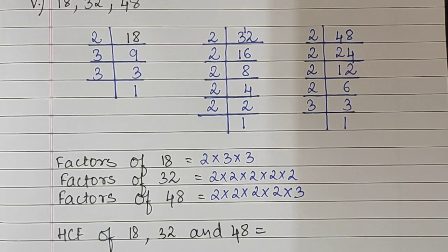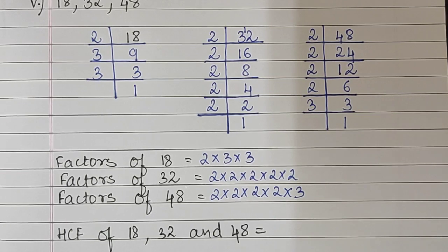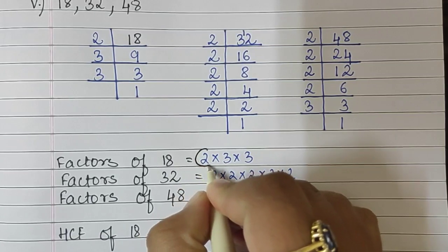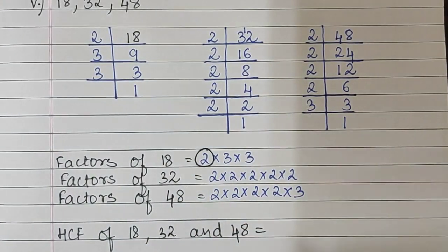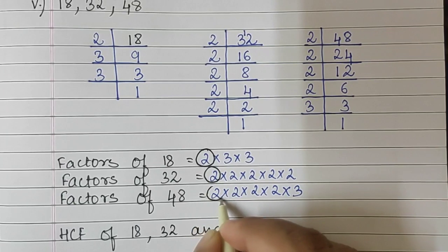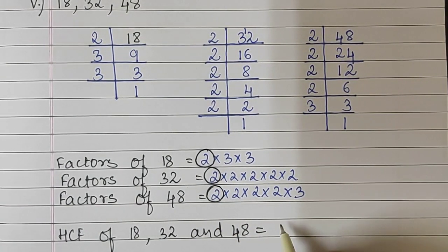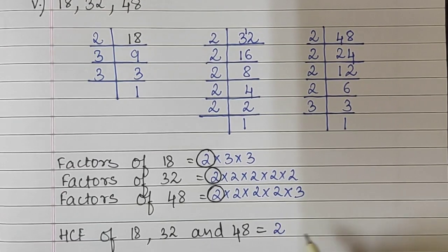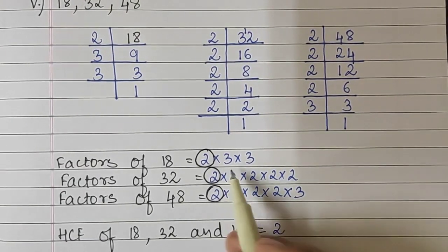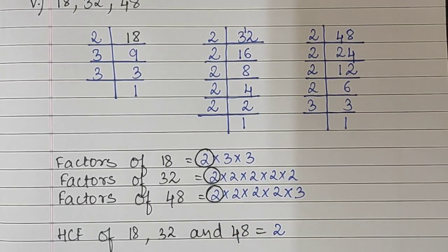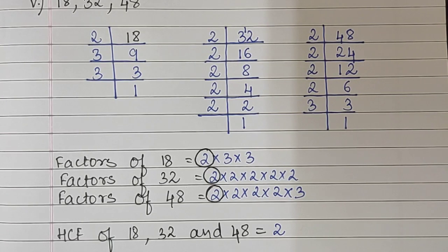So we will circle the common factors. The common factor is the number 2. Now the next factors are 3 and 3 but there is no 3 in 32, so we cannot take any other number. So the HCF of 18, 32, and 48 is the number 2.